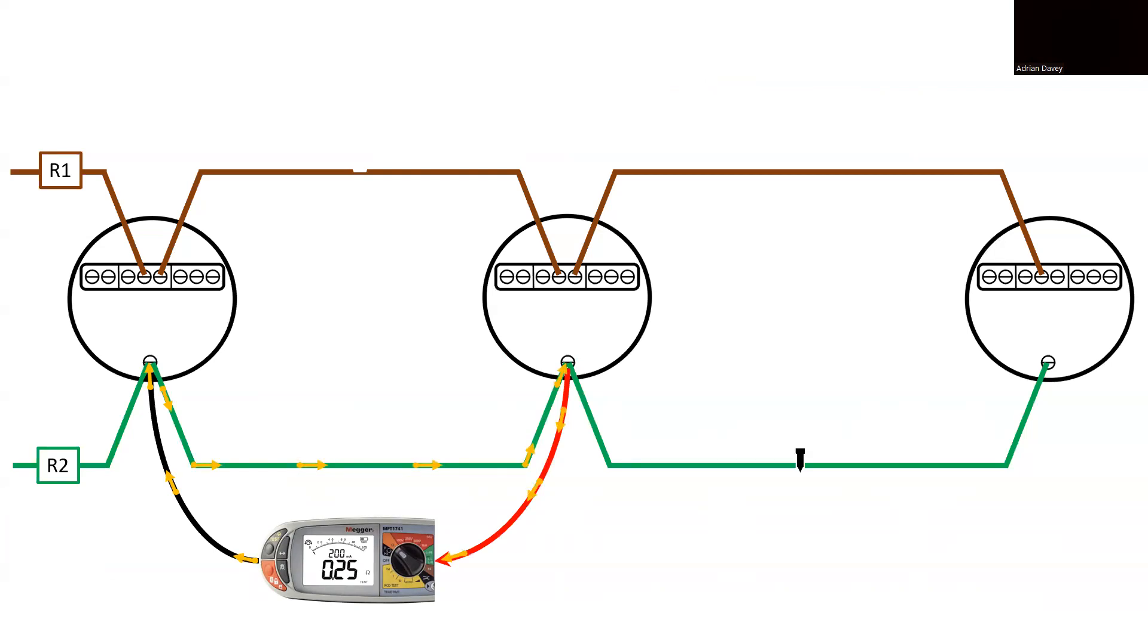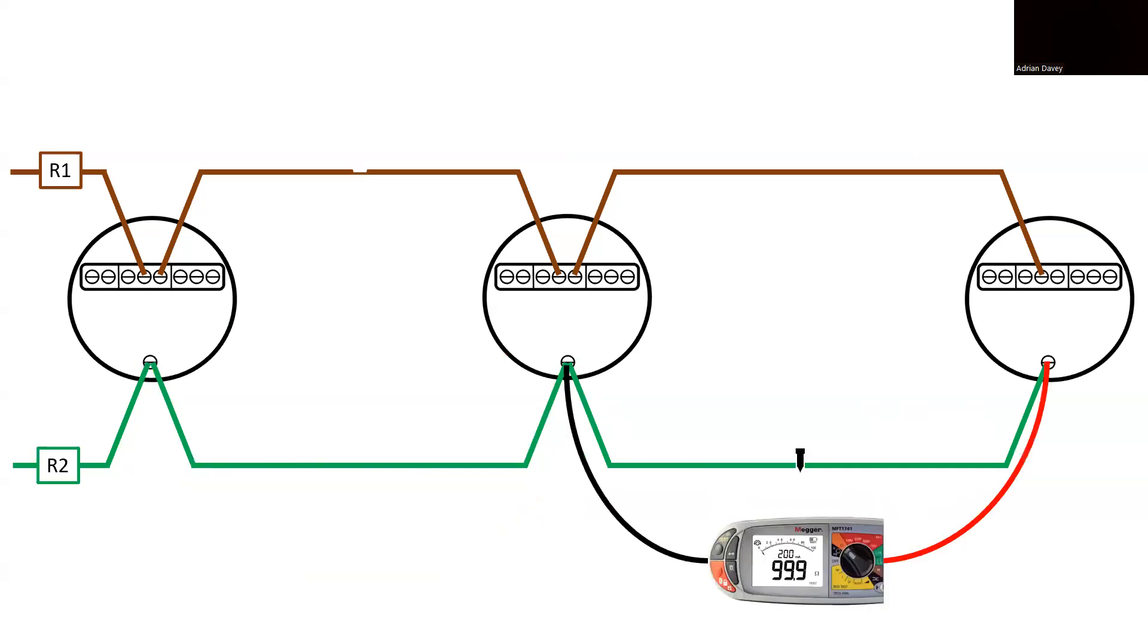Here, we measure 0.25 ohms, reinforcing that fault does not reside in this part of the circuit either. At last, we reach the final segment of the circuit, and because the circuit is broken, we lack a closed loop for electrons to travel on, resulting in an out-of-range reading of 99.9 ohms displayed on our MFT. This discovery allows us to pinpoint the location of the open circuit fault between two points.